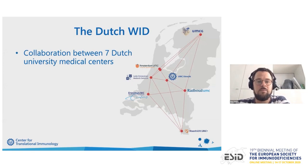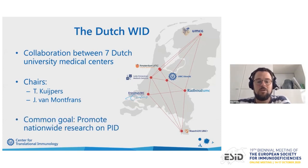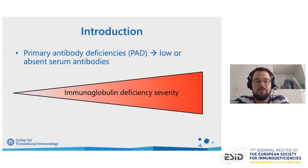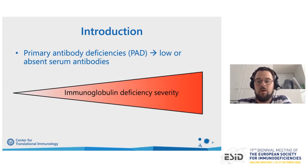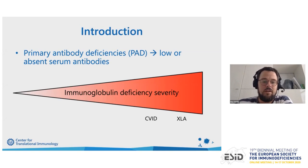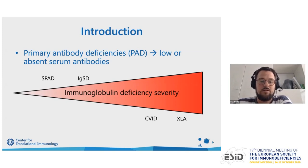We did this study with the Dutch WID, the Working Group Immunodeficiencies, a collaboration between seven Dutch university medical centers, chaired by Taco Kuypers and Joris van Montfrans. Our common goal is to promote nationwide research on PID. Primary antibody deficiencies are a type of PID in which low or absent serum antibodies are seen, classified according to immunoglobulin deficiency severity. There are more severe cases such as CVID or XLA, in which immunoglobulin replacement therapy should always be given. But there are also less severe types of PID, such as specific polysaccharide antibody deficiency and immunoglobulin subclass deficiency, in which the proper treatment remains uncertain.